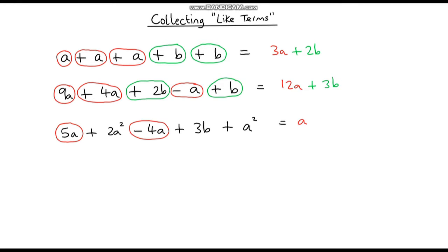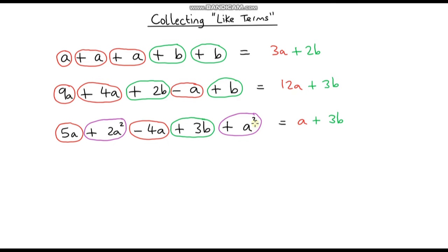Now let's look at the B terms. We've got plus 3B, and there are no more B terms, so we just add plus 3B. Finally, the A squared terms: we've got 2A squared and 1A squared. Just imagine 2 of something plus 1 of something — that's 3 of that something — so it's 3A squared. This is fully simplified. We cannot add the A to the 3A squareds — that does not give 4A squared, which is a common mistake.